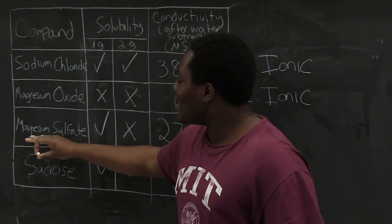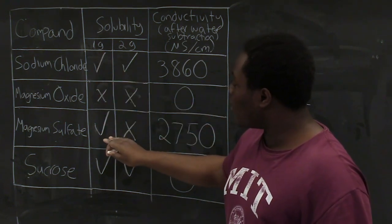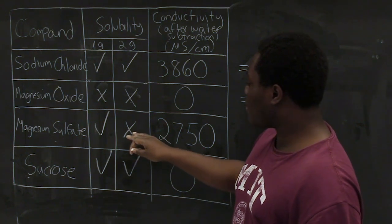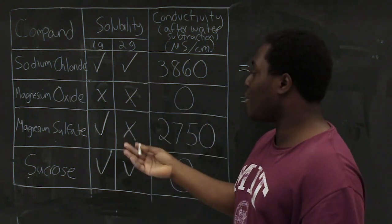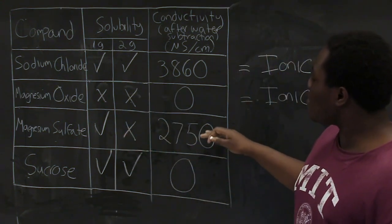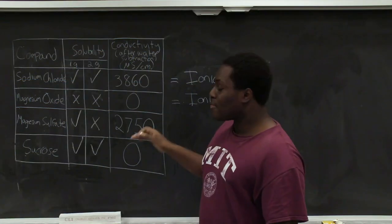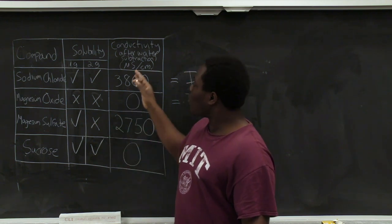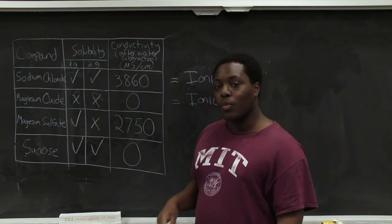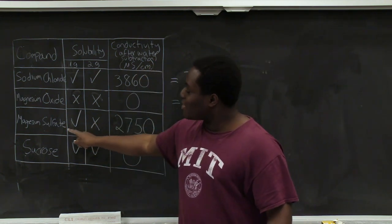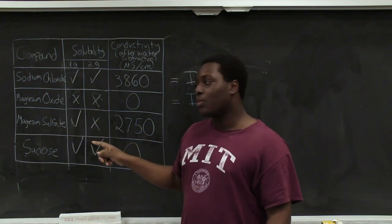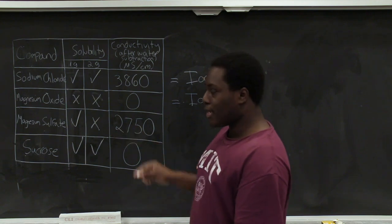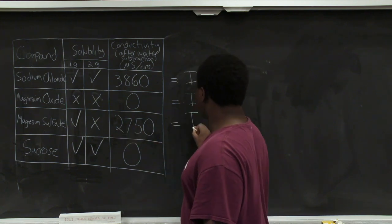Now we can look at magnesium sulfate. At one gram we do get some solubility, but at two grams we get no solubility — it was not able to dissolve completely. We are able to measure some conductivity, which means that magnesium sulfate dissociated into respective ions. Magnesium sulfate has a limited solubility in water, which is why at two grams it wasn't able to dissolve completely. So magnesium sulfate is still an ionic compound.